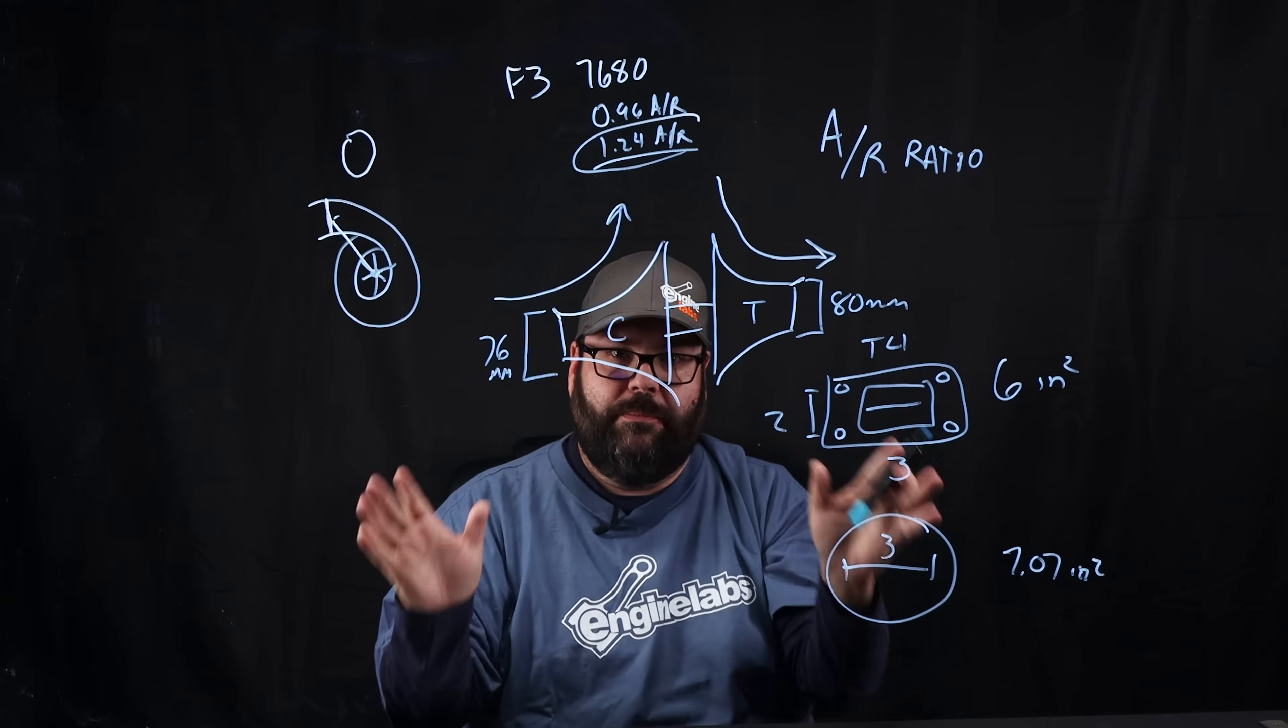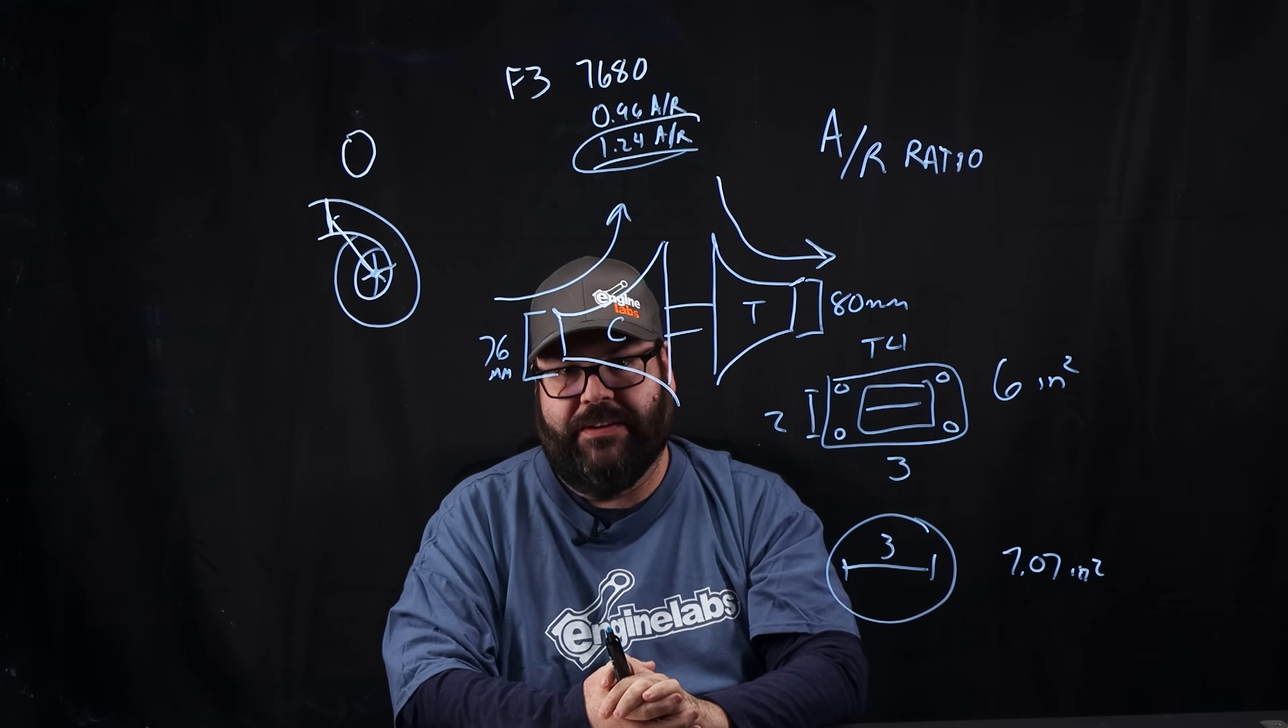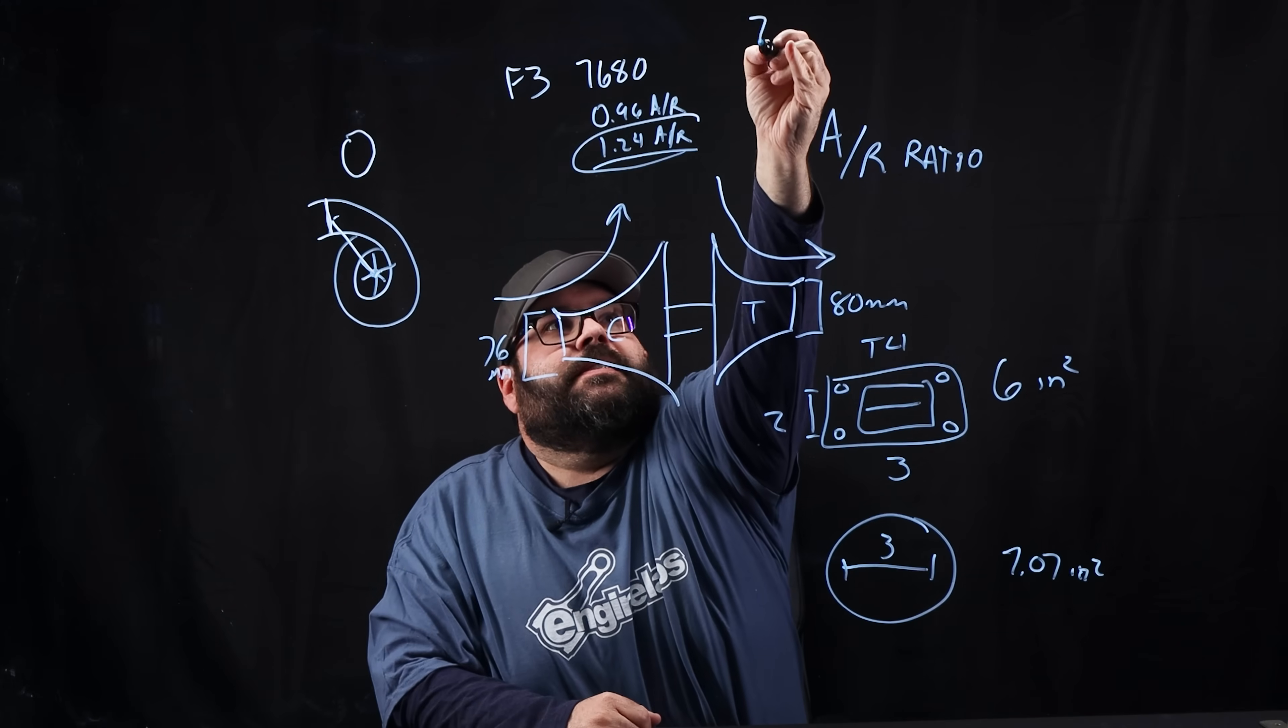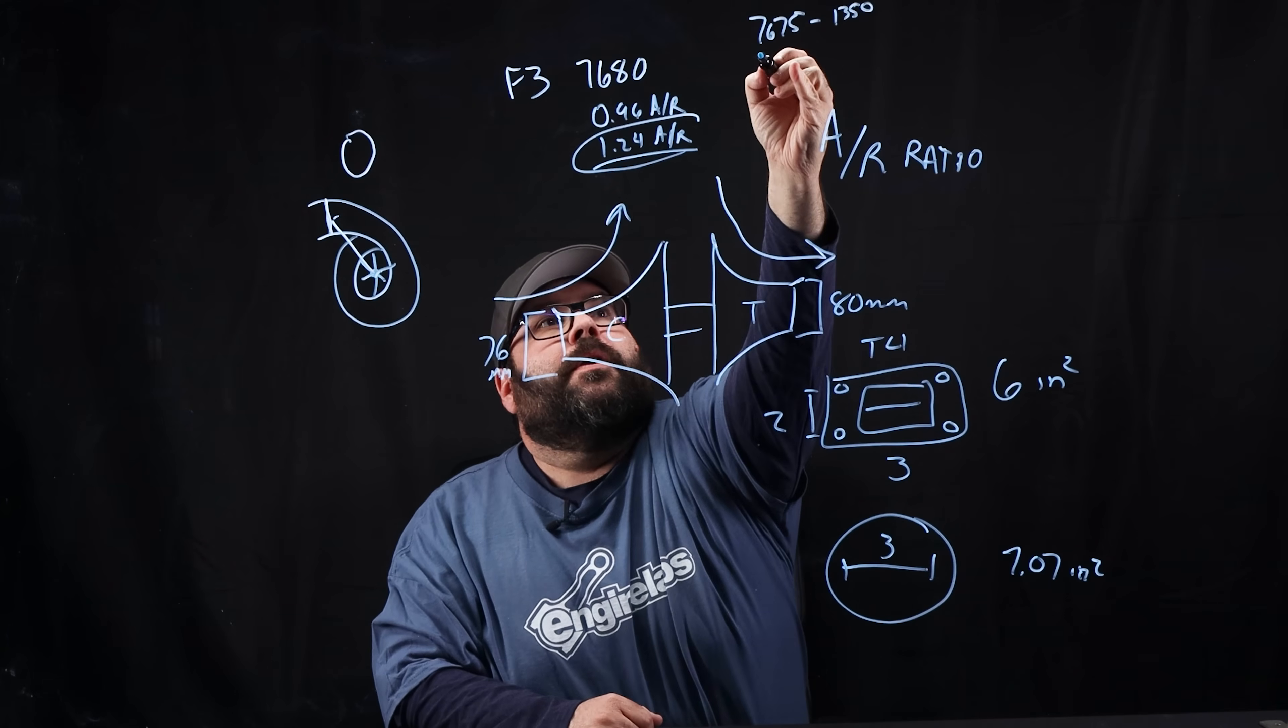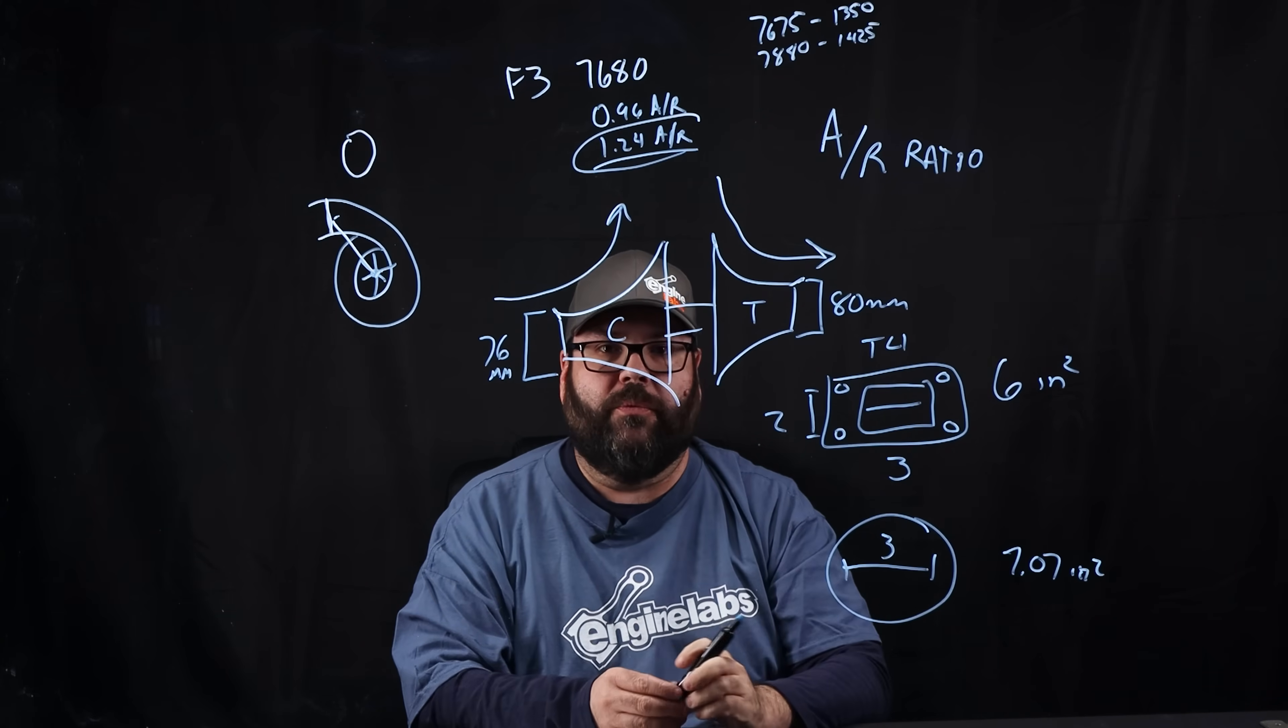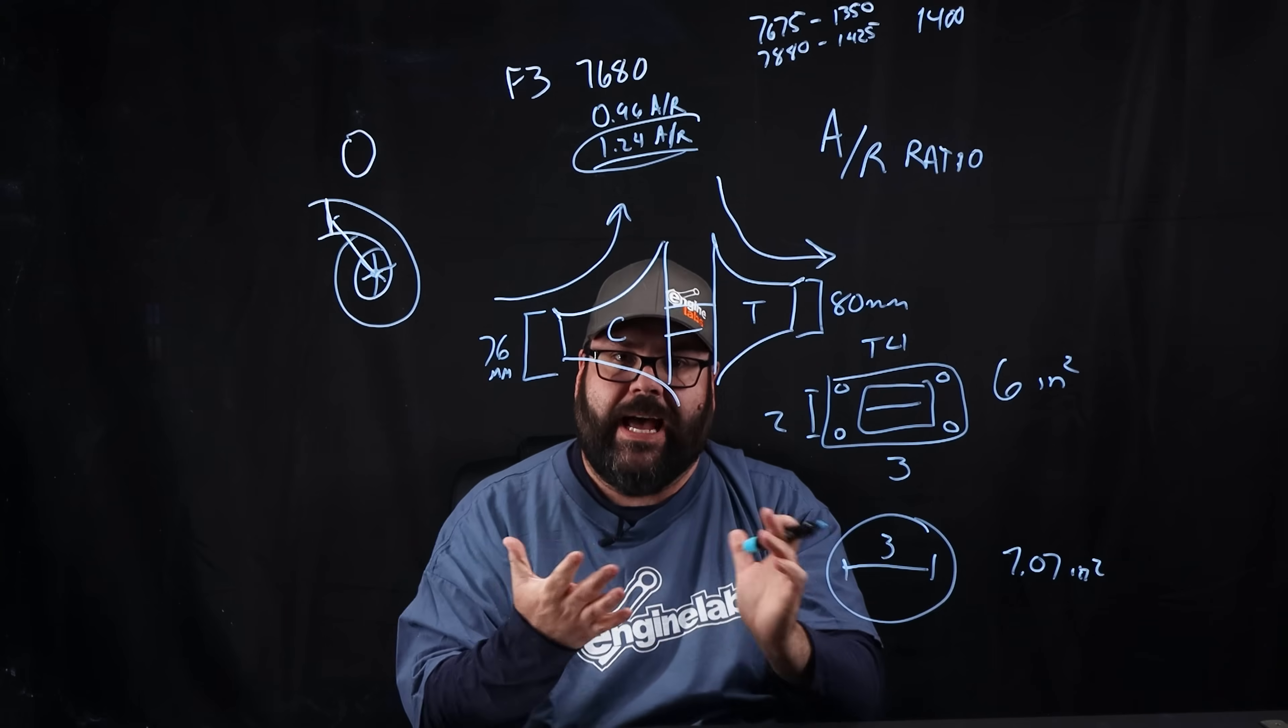Now, when we put this all together, we had no frame of reference for exactly what it would make because HPT does not make an F3 7680 off the shelf. They make a 7675 and they make a 7880. So the 7675 is rated at 1350. The 7880 is rated at 1425. So our guess, just running numbers and scientific wild ass guess, was that we were going to see 1400 horsepower. We were to split the difference.